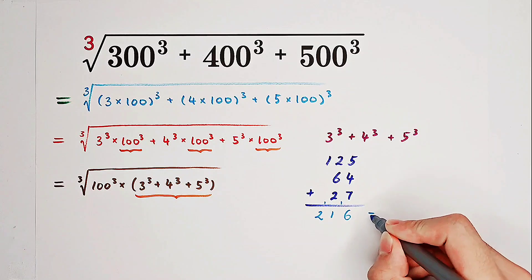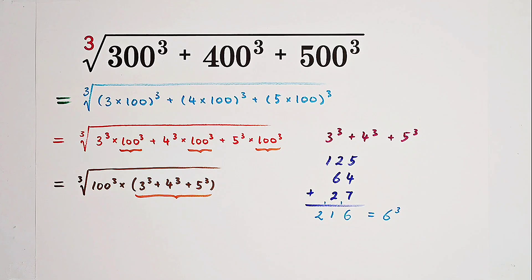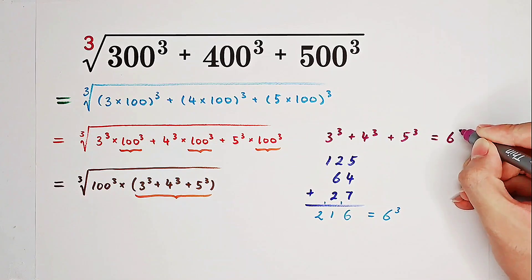And 216 is actually 6 cubed. It is 6 times 6. So we can say that the answer is actually 6 cubed.